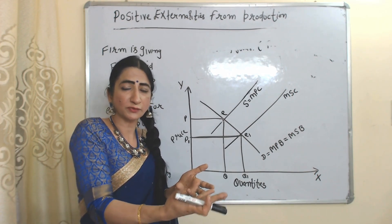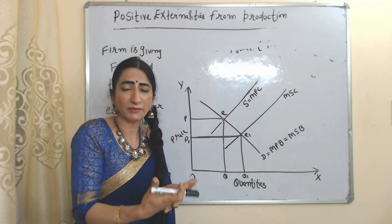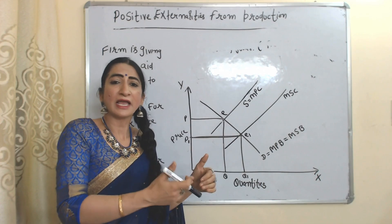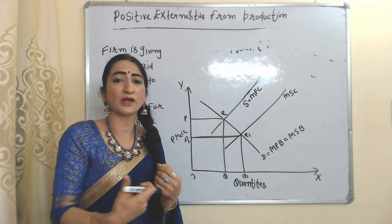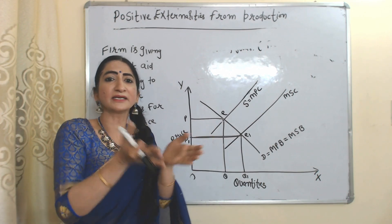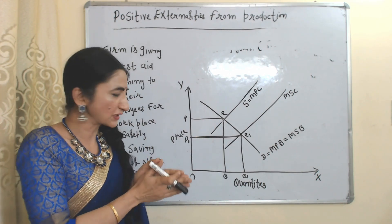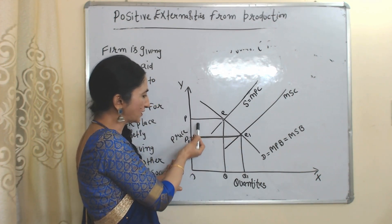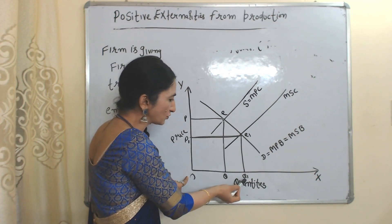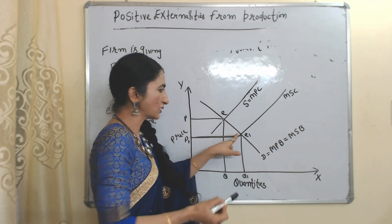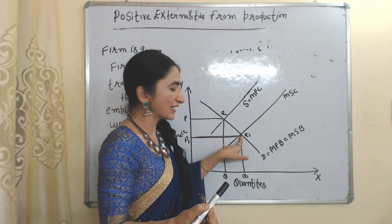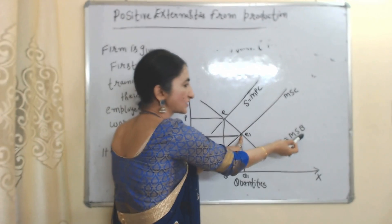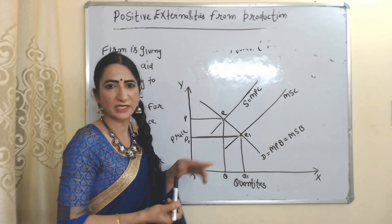That's why production of this firm should be increased, so government intervention is a must. The government will give subsidies to this firm to encourage their production. As the government provides a subsidy, their cost falls, prices fall, demand increases, and eventually production also increases. E1 is our new equilibrium point where prices fall from P2 to P1 and production increases from Q to Q1. At E1, marginal social cost equals marginal social benefit, so E1 is called the socially optimum equilibrium point.